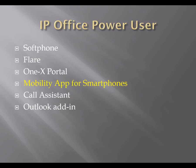IP Office Power User is a license that you purchase. It gets installed onto your IP Office, and that one license grants you access to many different applications: a soft phone, Flare, 1X Portal, Mobility, Call Assistant, Outlook add-in. Today we're talking about the mobility app, but the backend for all of these applications is the 1X Portal. With that one license you get quite a bit, and it's a one-time license — you purchase it, you'll have it forever. It's not a monthly fee; it doesn't expire. The cost is around $150, maybe a little more, but it's a very valuable license.